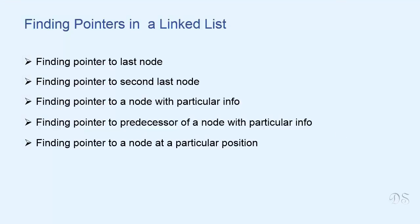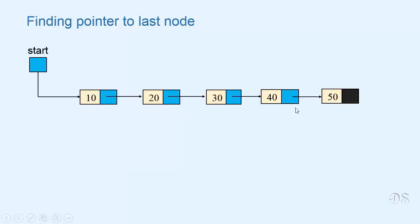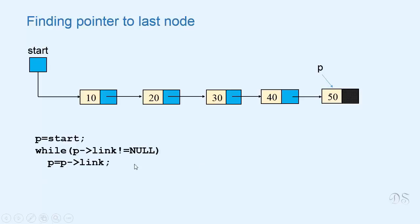Before studying insertion and deletion, let's see how we can move in a linked list and find pointers to particular nodes. We will find pointers to: the last node, the second-last node, a node with particular info, the predecessor of a node with particular info, and a node at a particular position. To find the last node, we use a loop where the condition is p->link != null, stopping when p->link is null — meaning p is pointing to the last node, since the link part of the last node is null.